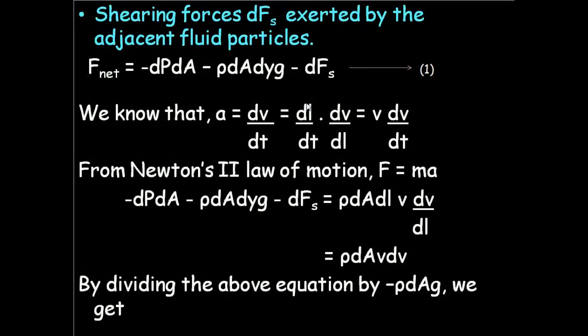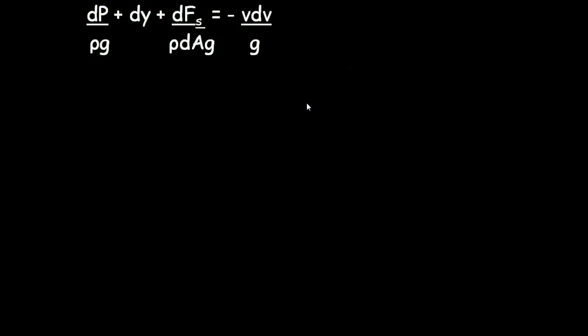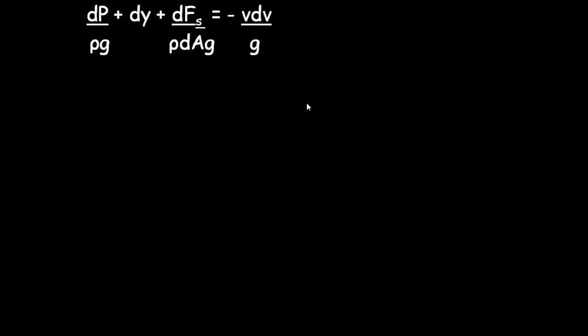Substituting the net force and the mass times the acceleration, we get ρ dA v into dv on the right-hand side. By dividing the above equation by negative ρ dA, we get this equation here. The term dFs over ρ dA g is called the lost head and is denoted by dhl.